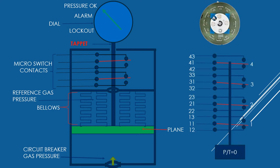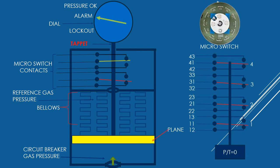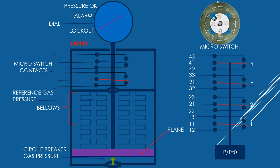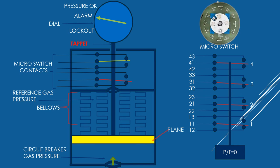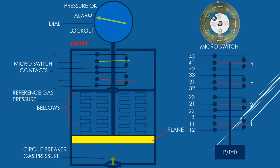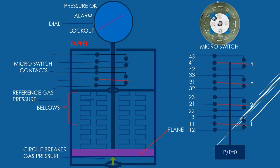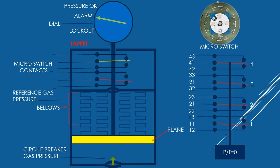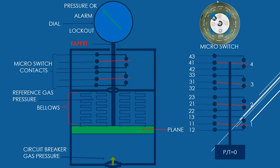Micro switches are operated by a tappet or lever which moves either to disconnect a circuit or to connect the circuit. The tappet is set on the plane separating the reference gas pressure chamber and circuit breaker gas pressure chamber, and can move freely up and downward according to movement of the diaphragm to make and break contacts on the micro switch. Any decrease or increase of pressure inside the circuit breaker pole is compared, so the tappet moves up and downward according to contraction or expansion of the bellows.